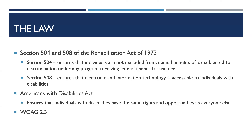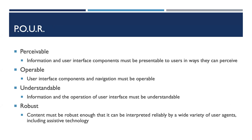At the bottom you'll see WCAG 2.3. WCAG stands for Web Content Accessibility Guidelines, and 2.3 is the current version. WCAG isn't a law itself — it's more of a set of guidelines and standards to help make content more accessible. WCAG has four main principles that fall under the acronym POUR: Perceivable, Operable, Understandable, and Robust.